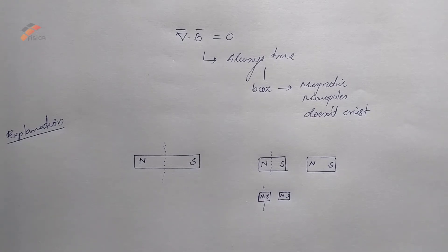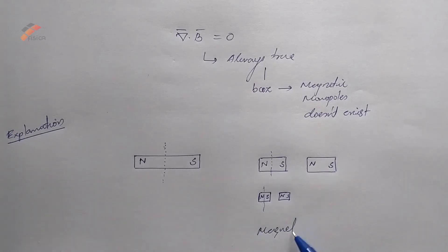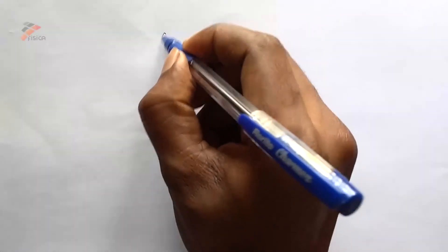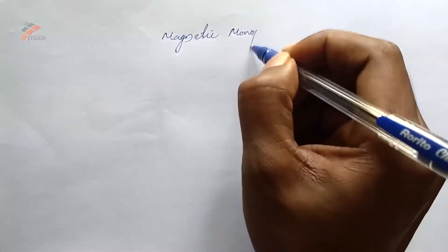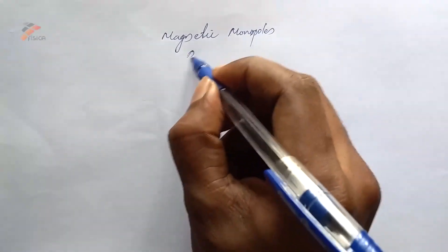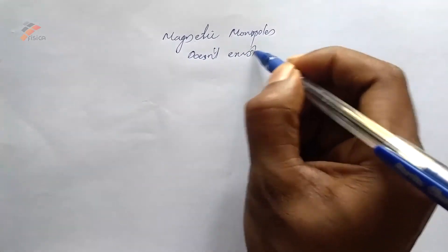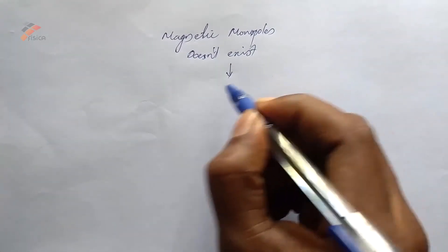Even if you are further divided into two pieces, you can't separate the north and south poles. That is why we say magnetic monopoles doesn't exist.